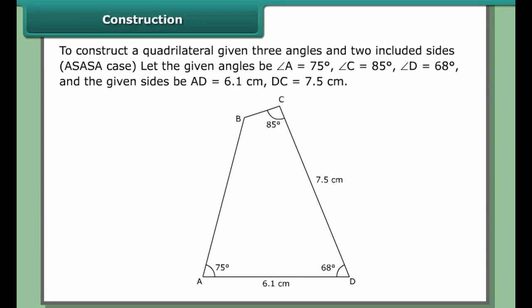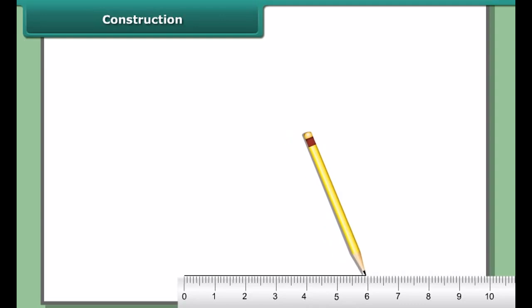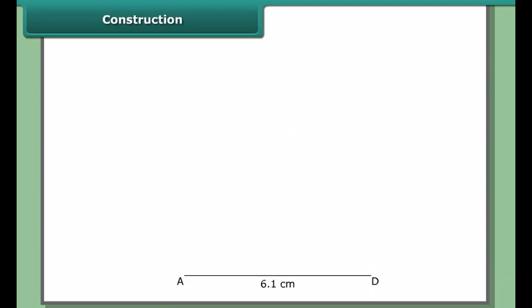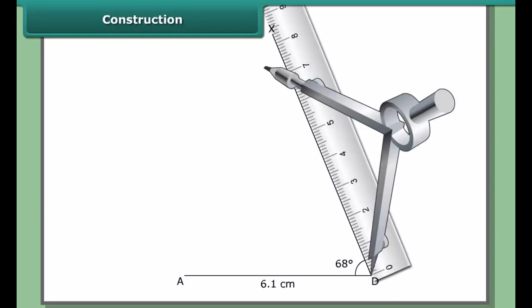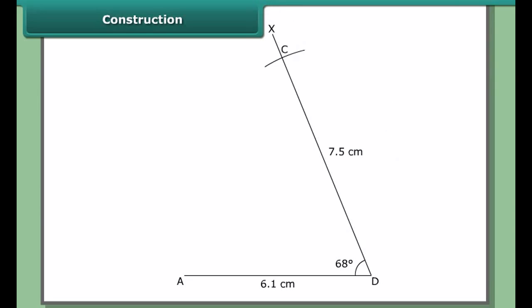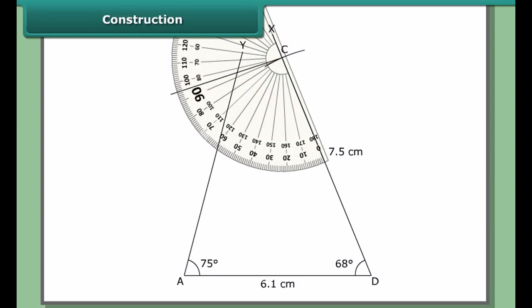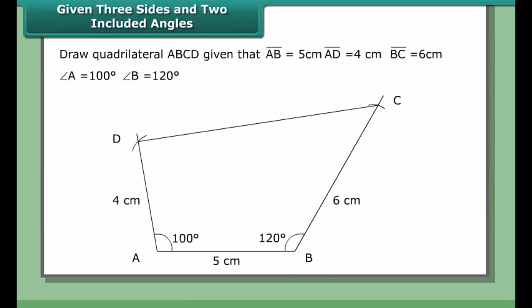In this case we can construct the quadrilateral directly without dividing it into two triangles. Construct AD as 6.1 cm. At D, draw angle ADX = 68°. With D as center and radius 7.5 cm, cut off DC = 7.5 cm on ray DX. At A, draw angle DAY = 75°. At C, draw angle DCZ = 85°. Let rays AY and CZ intersect at B. Then ABCD is the required quadrilateral.